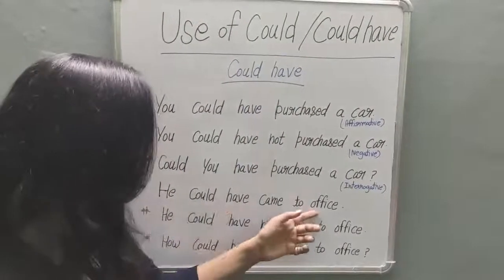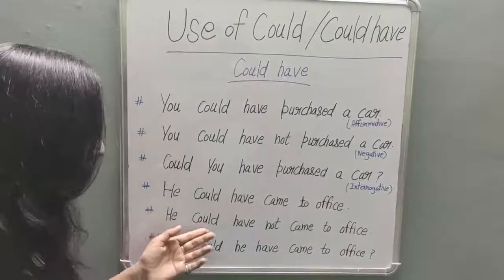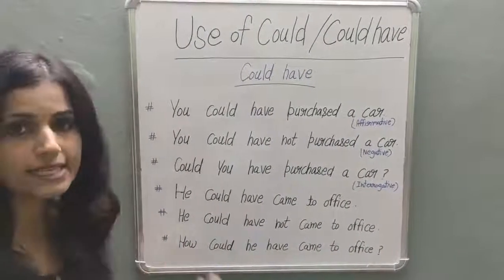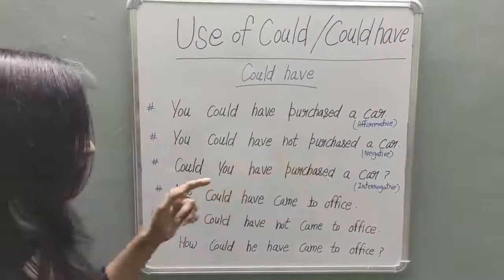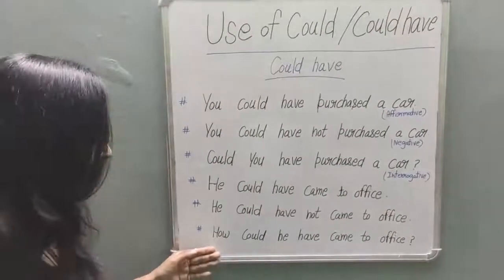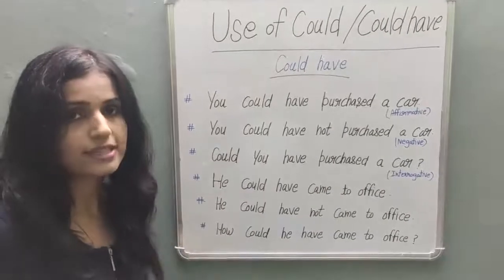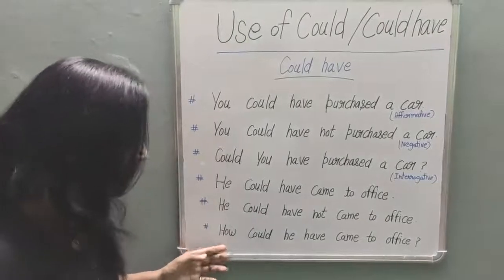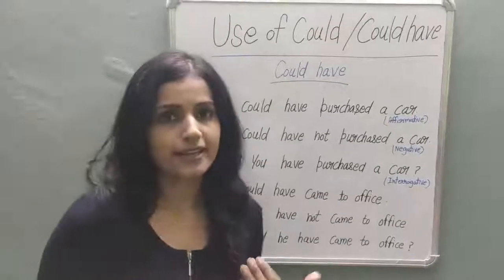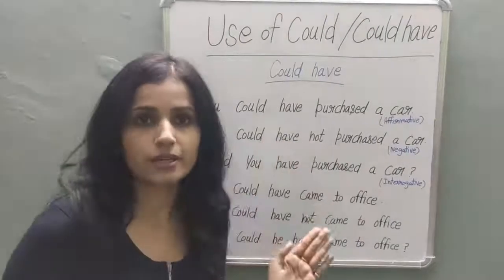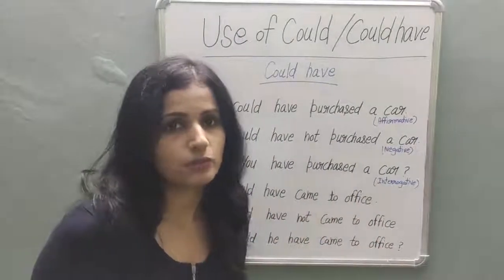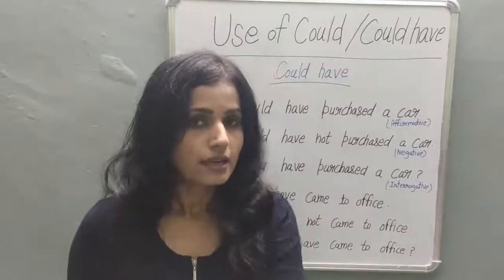Another example: 'He could have come to the office.' Negative: 'He could not have come to the office.' Interrogative: 'How could he have come to the office?' — here we have a question word and the helping verb 'could'. In Hindi, it ends as 'Ho sakta tha', 'Ho sakti thi', 'Ho sakte the'. So you use 'could' and 'could have' to make related sentences.